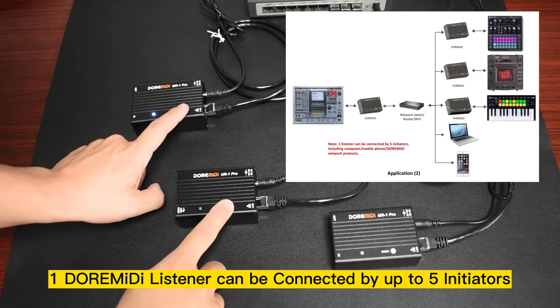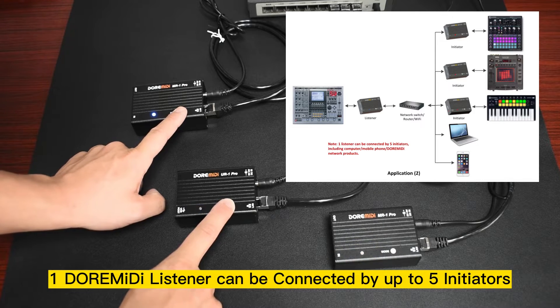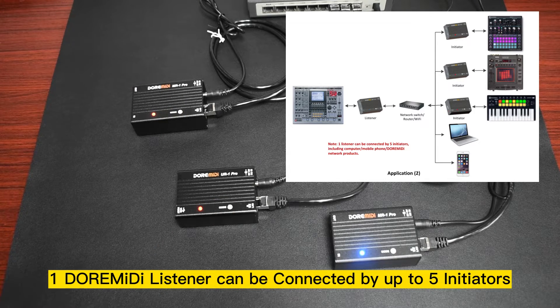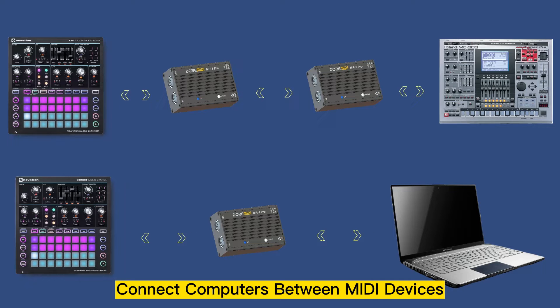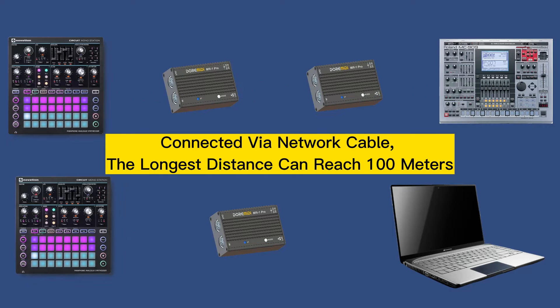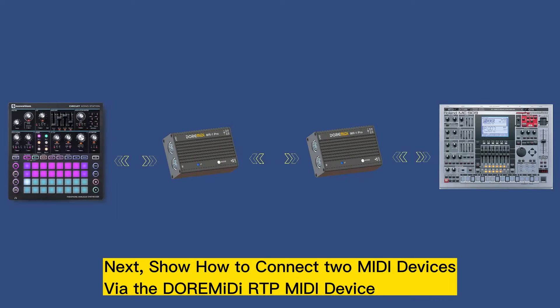One MIDI listener can be connected by up to five initiators. To configure a static IP and connect directly to media network devices, you can also connect directly to a computer's network port via a network cable. The maximum cable distance can reach 100 meters.